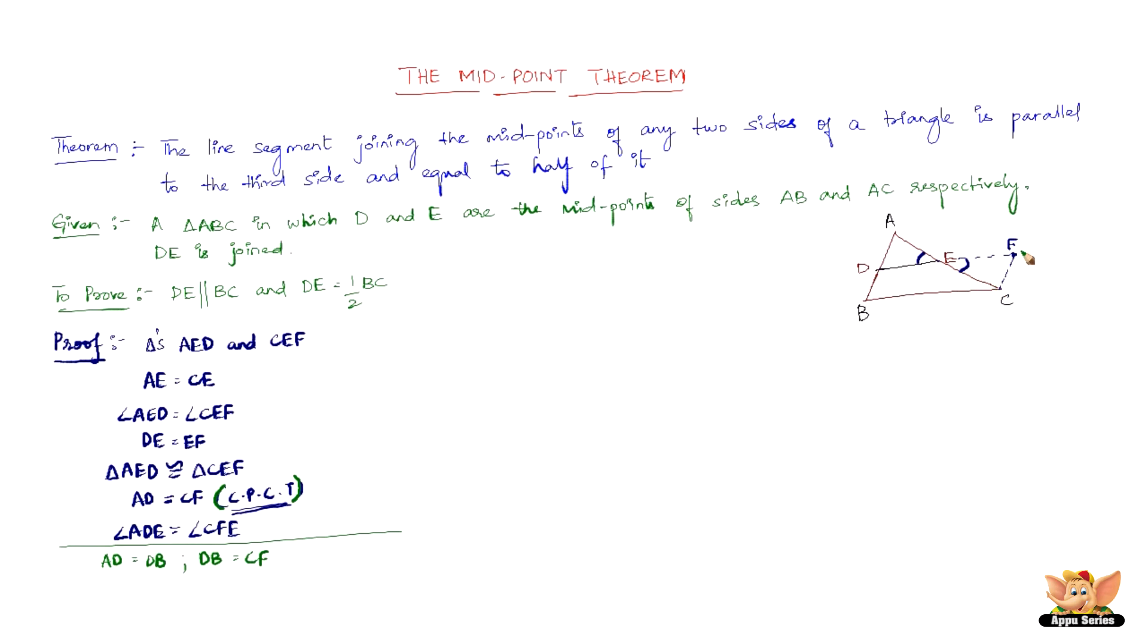Now DF intersects AD and FC at D and F respectively, such that angle ADE equals angle CFE. Because it is a transversal, therefore we have alternate interior angles. So now, therefore, we can prove that AD is parallel to FC. AD is parallel to FC, and also DB being parallel to CF.